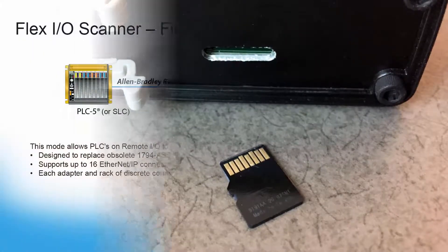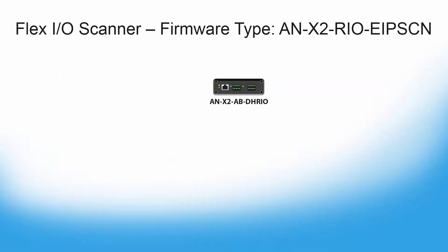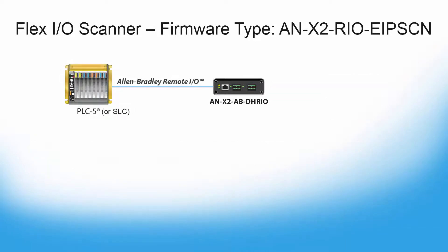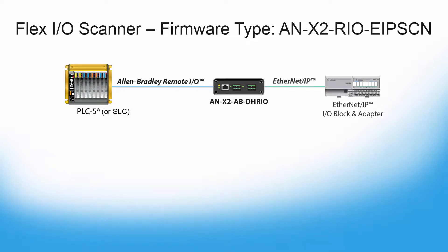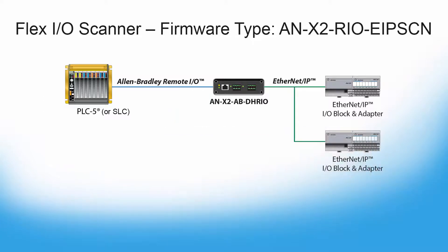The ANX2RIO EIP-SCN firmware is intended specifically to function as a flex IO scanner. This mode allows PLCs on remote IO to connect to and control 1794 AENT Ethernet IP flex adapters, so that you can replace your old IO with newer Ethernet IP based flex IO. This is probably the sole application that you would ever use this firmware for.